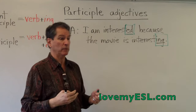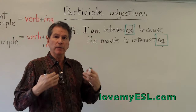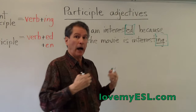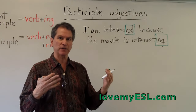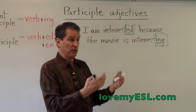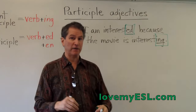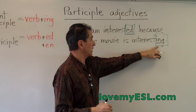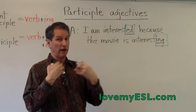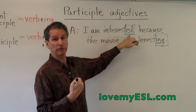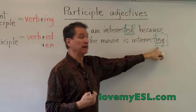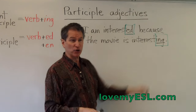Another example: I am bored because the class is boring. Or, I am confused because the directions were confusing. The directions give me that feeling, so they are confusing — that's -ing. But I have the emotion, so I am confused — that's -ed. So: have the emotion = -ed; give the emotion = -ing.